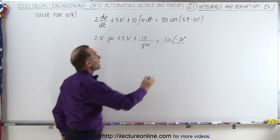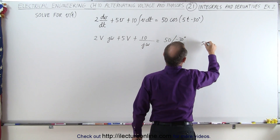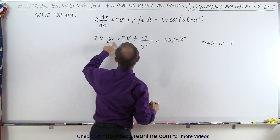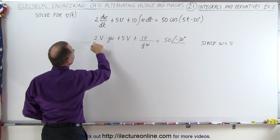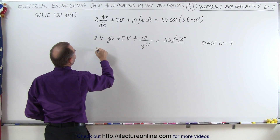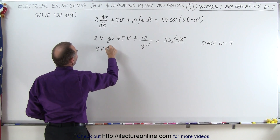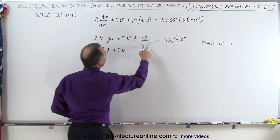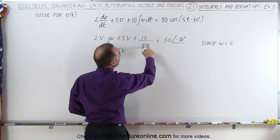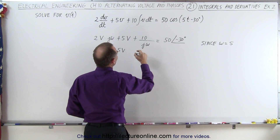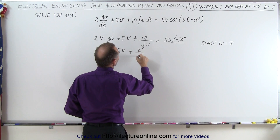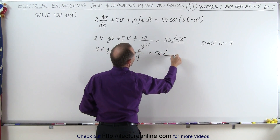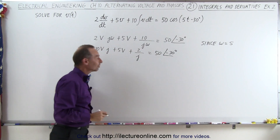They do give us omega. We know the angular frequency omega is equal to 5, so we can go ahead and plug that in. So 5 times 2 gives us 10V times j, and here that would be plus 5V. Since omega is 5, 10 divided by 5 is 2, giving us plus 2 divided by j, and the right-hand side is 50 at a phase angle of minus 30 degrees.